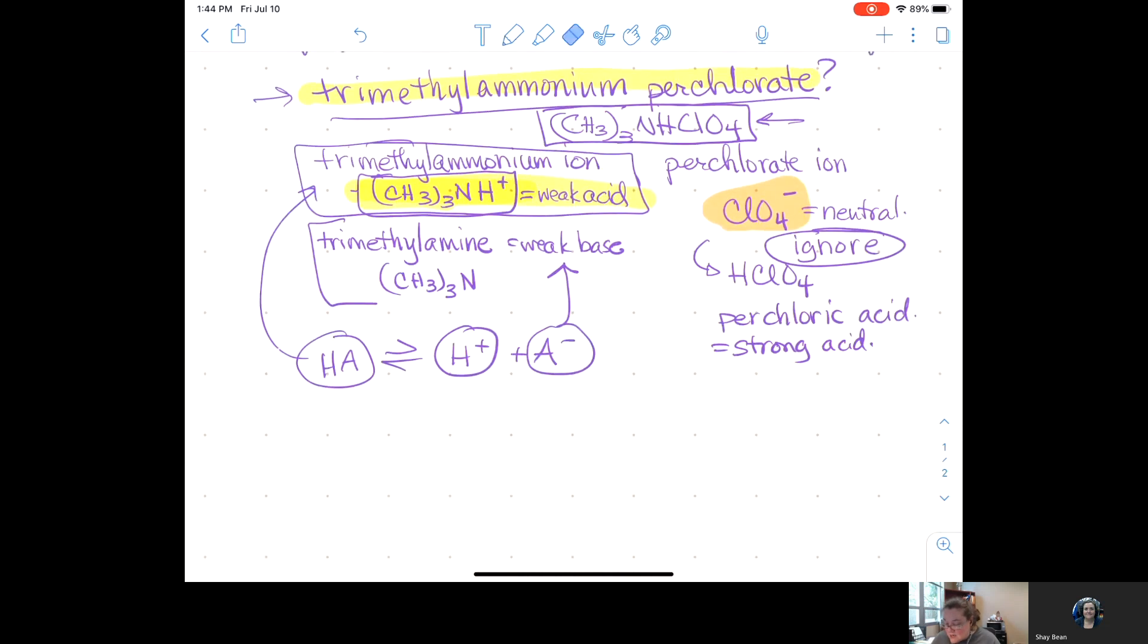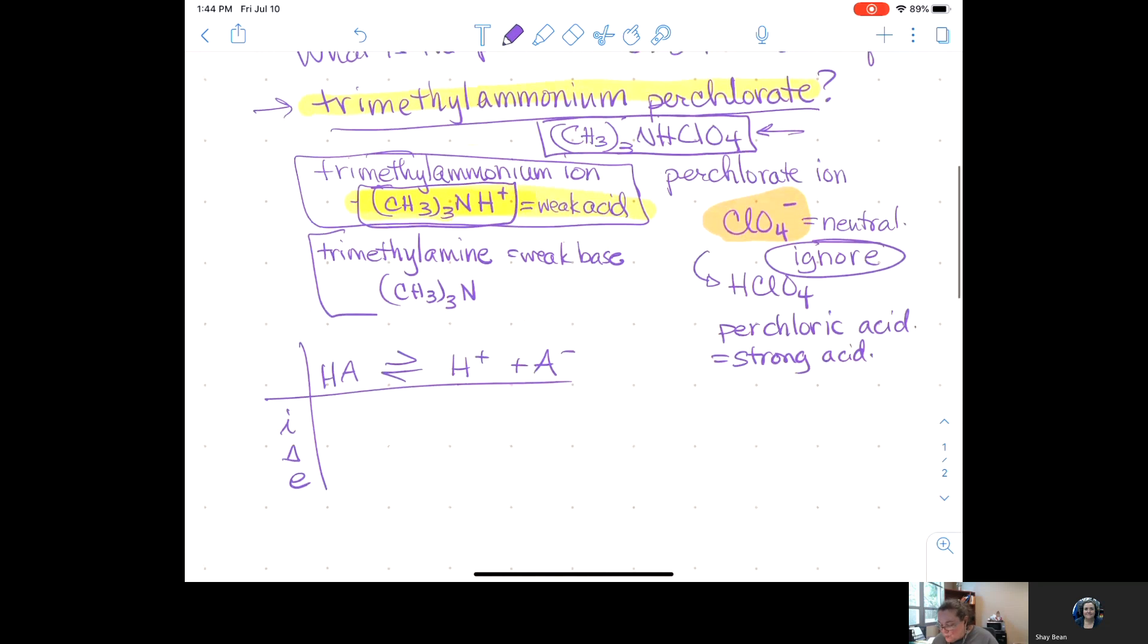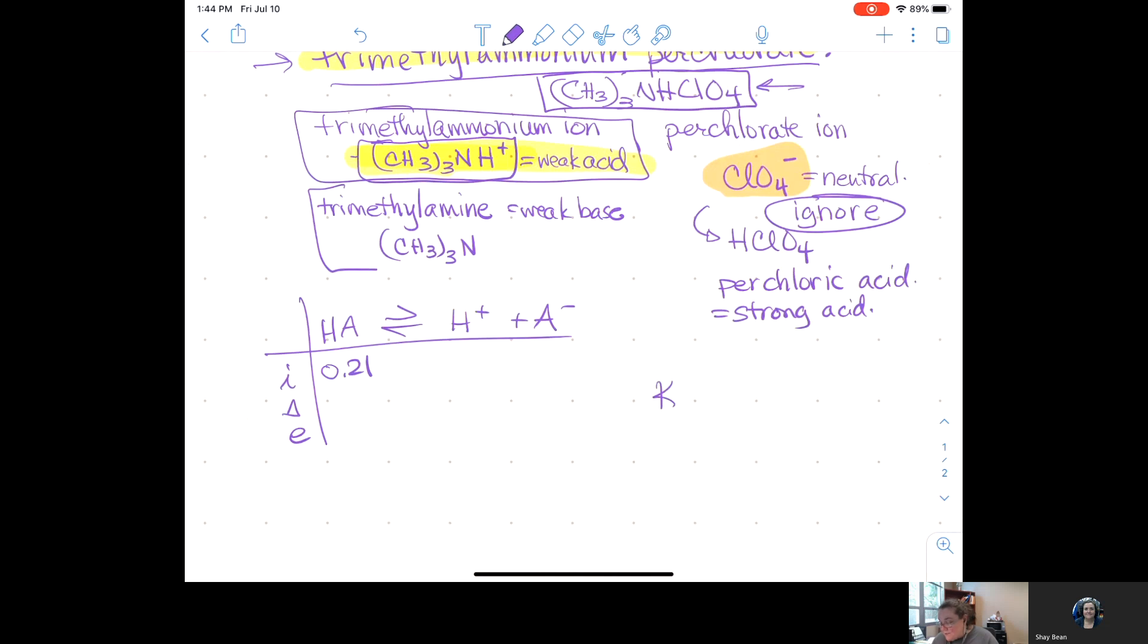This is my trimethylammonium ion. There's my weak acid. The fact that this is its conjugate, that means that's the trimethylamine. But it doesn't matter. The H plus is the important one. I'm going to need to find its concentration so I can get the pH.